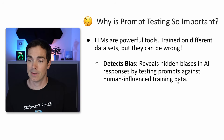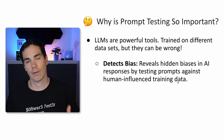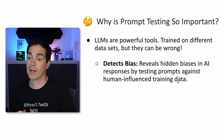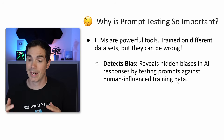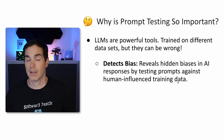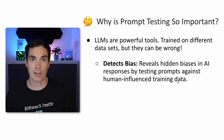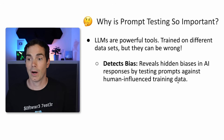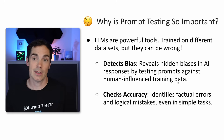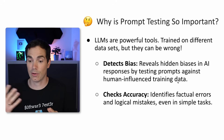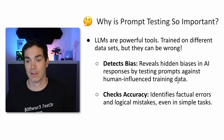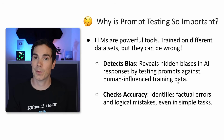LLMs have some flaws. They can be biased — there could be tech bias — revealing hidden biases in AI responses by testing prompts against human-influenced training data. We all know that LLMs are trained on big data sets from different companies, backgrounds, industries, and countries, so they might be biased. Accuracy is also really important to check, as LLMs can have factual errors, logical mistakes, or even simple tasks can go wrong. That's why we should focus on prompt testing.